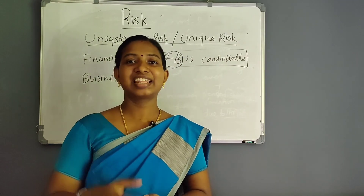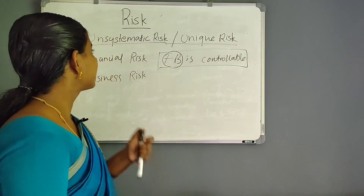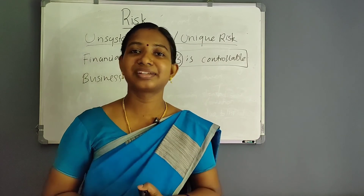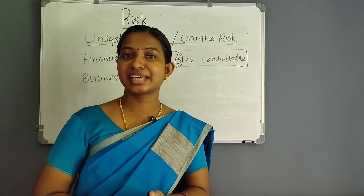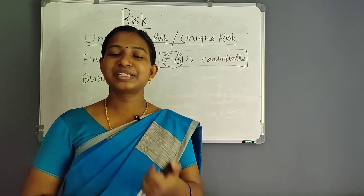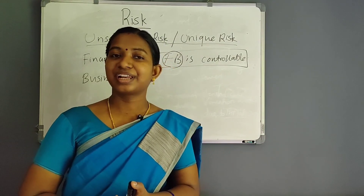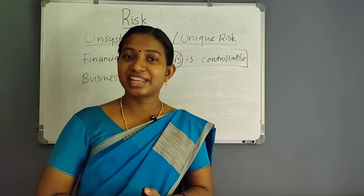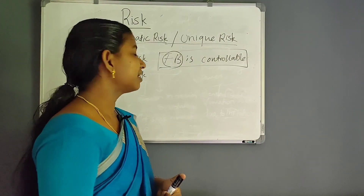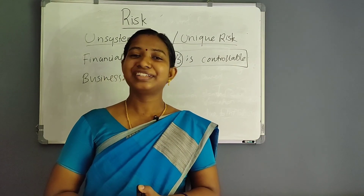To summarize: the main item risk has two classifications — systematic risk and unsystematic risk. Systematic risk has three sub-types: interest rate risk (variation in return due to interest rate changes), market risk (variation due to stock market volatility), and purchasing power risk (variation due to inflation). Unsystematic risk is controllable and unique risk, with two types: financial risk and business risk. For more information, please comment in the comment box and come to the next class.